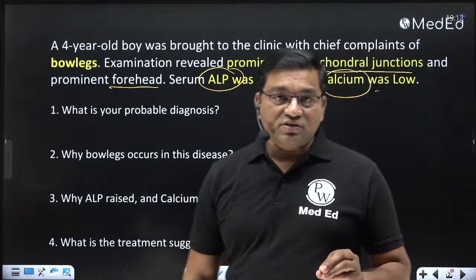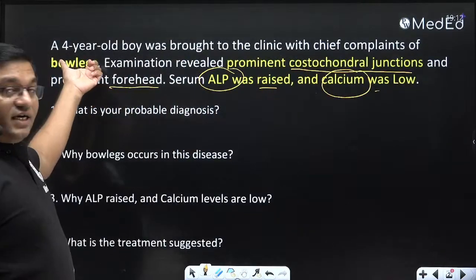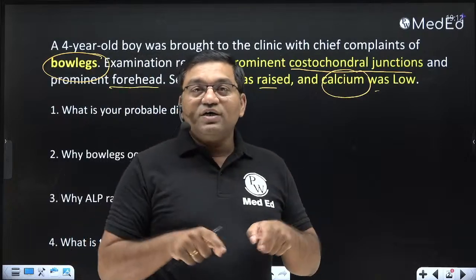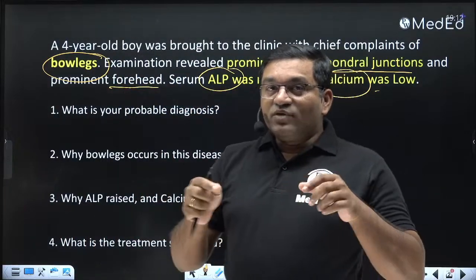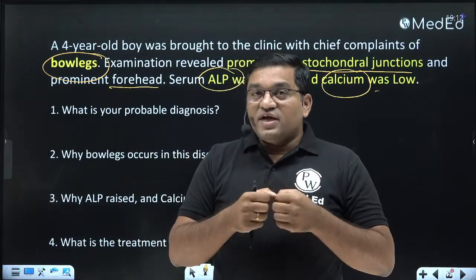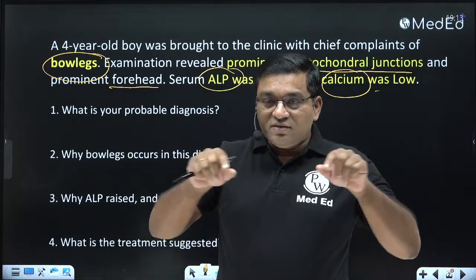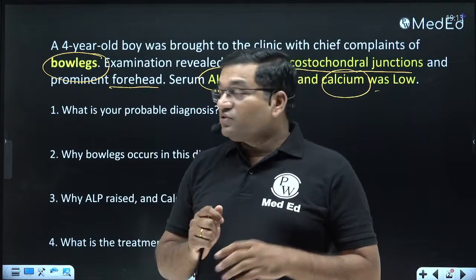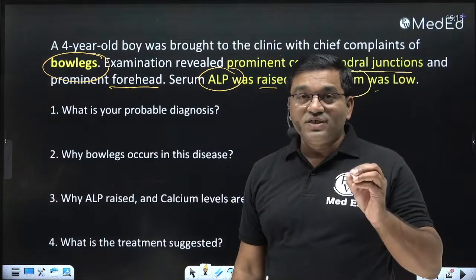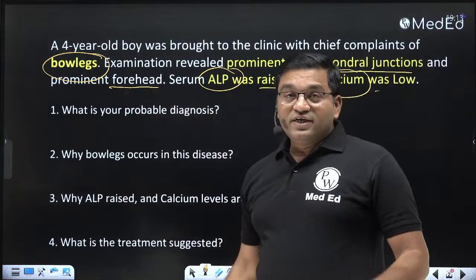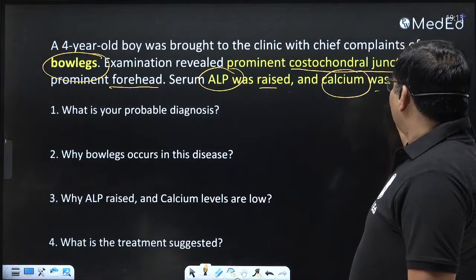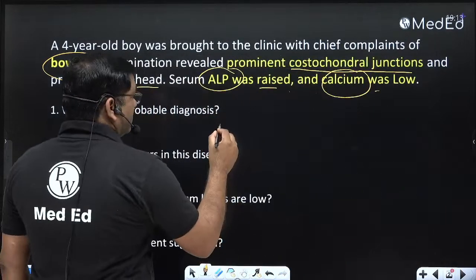The key features in this clinical case: the age of the child is four years with chief complaints of bow legs — bowing of the legs, known as genu varum deformity. Valgum means knees stick together; varum means there is a distance between the knee joints. Examination revealed prominent costochondral junctions, known as rachitic rosary, and prominent forehead, known as frontal bossing. Serum ALP was raised and calcium was low. The diagnosis is rickets.